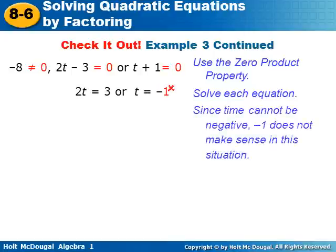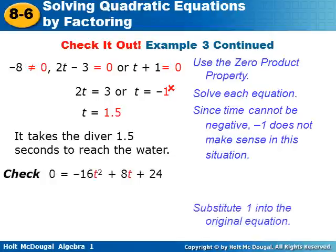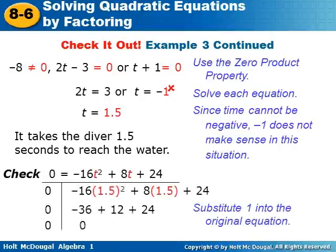T cannot equal negative one because it doesn't make sense for the diver to be diving for a negative amount of time. The other value we get is t equals one and a half, so it takes the diver one and a half seconds to reach the water. We plug that back in to check and confirm it is equal, so we know we've done it correctly.